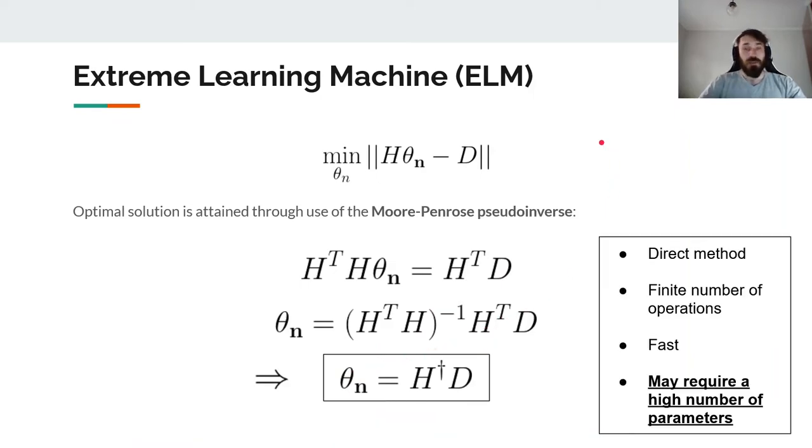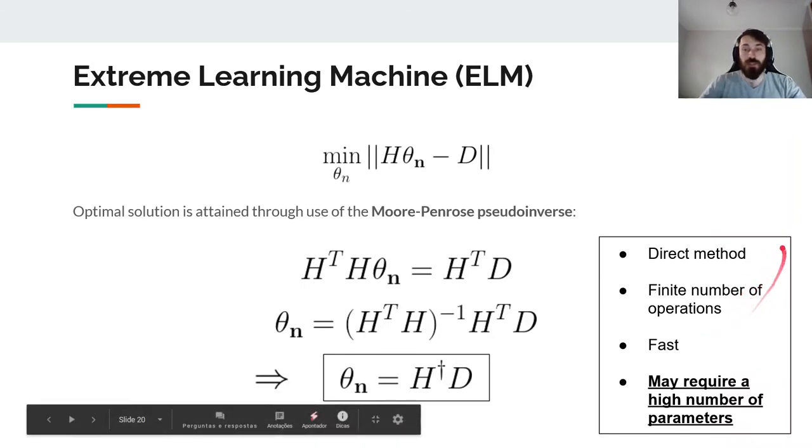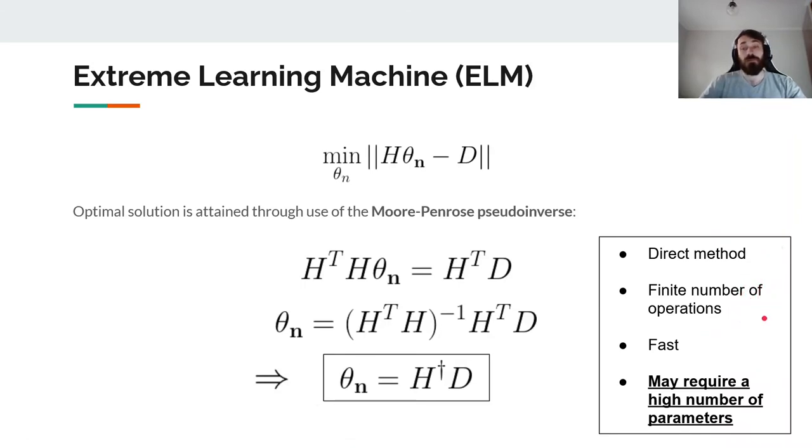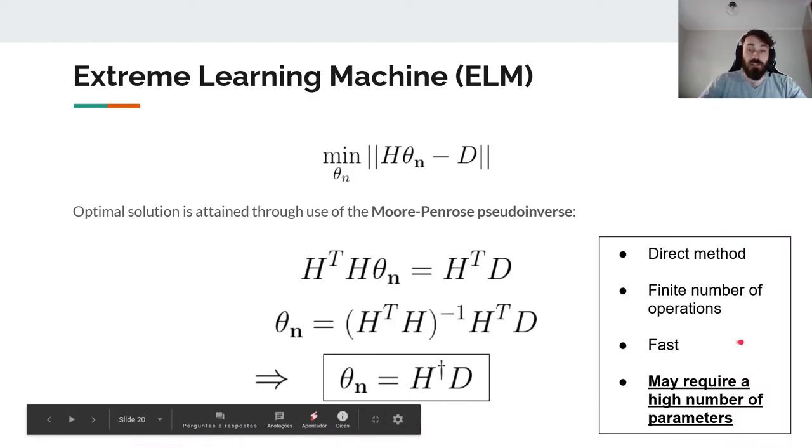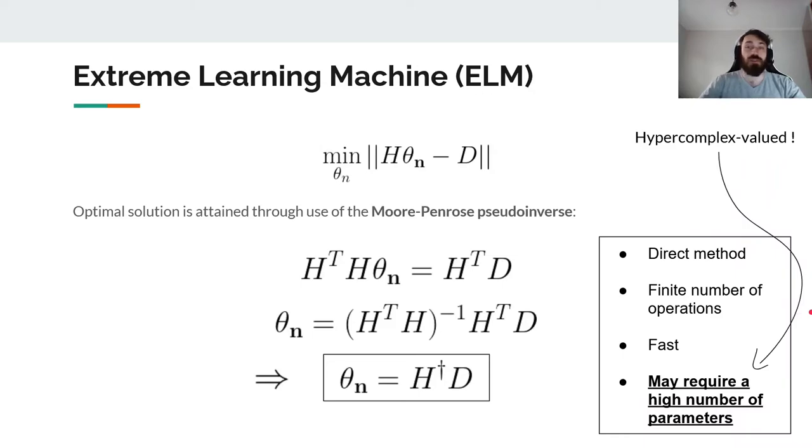Now for this method we're looking at a direct method so it has a finite number of operations in order for you to attain the optimal result. It is quite fast for these reasons and even though we have the same architecture of the MLP, we generally require a higher number of parameters and this is where comes in the biggest idea of using hypercomplex valued algebras for machine learning and neural networks.